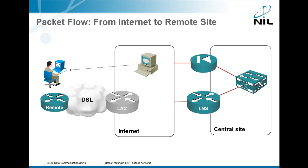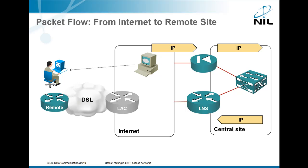What about the return flow? An IP packet goes from the remote web server to our firewall where it's filtered. If it passes through, it comes to our central site, which sends it to our LNS based on the routing information propagated from the remote site through the LNS. There, it has to be encapsulated in an L2TP packet and sent to the LAC, where the L2TP packet is opened, the PPP frame is extracted, and sent over ethernet through PPPoE to the remote site, where the IP packet is then delivered to the end user.